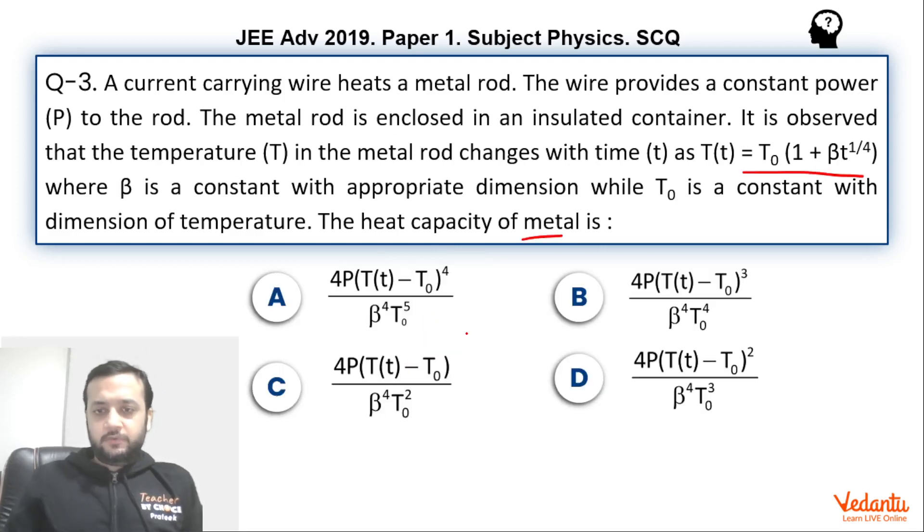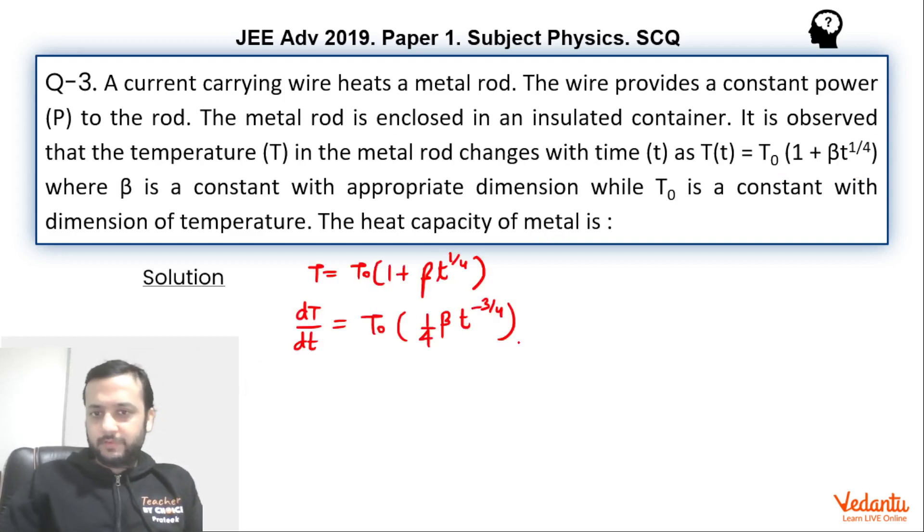Now in the options, if you go back, so there is no term of time. That means with respect to time we don't have to find the answer. We have to find the answer in terms of temperature itself. So what we will do, we will replace this time from the first equation itself.